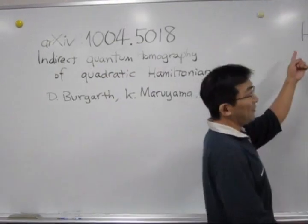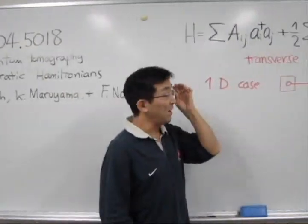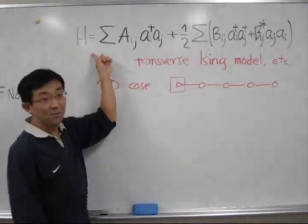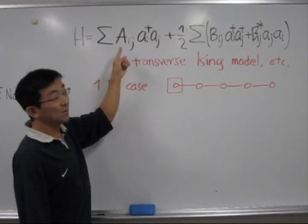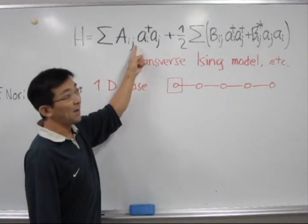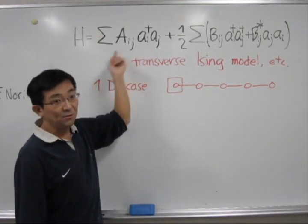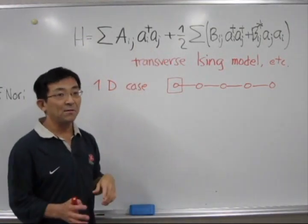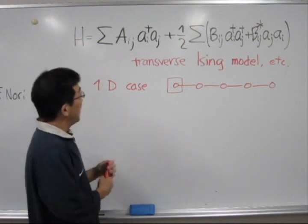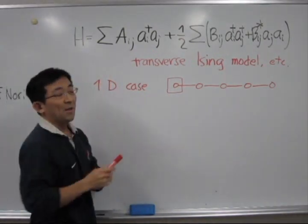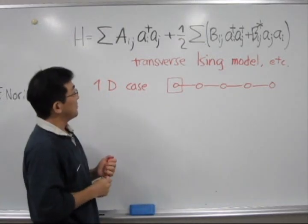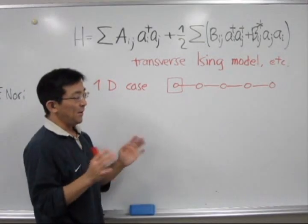The Hamiltonian we consider here is of this form. It's quadratic in A and A dagger, which are annihilation and creation operators of either fermions or bosons. This class of Hamiltonian actually includes very interesting